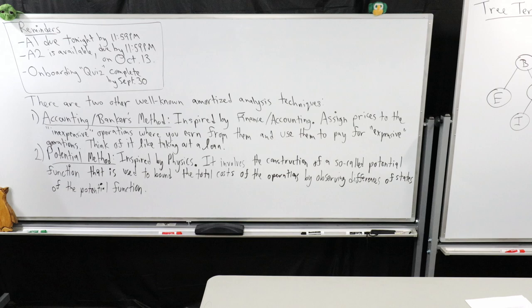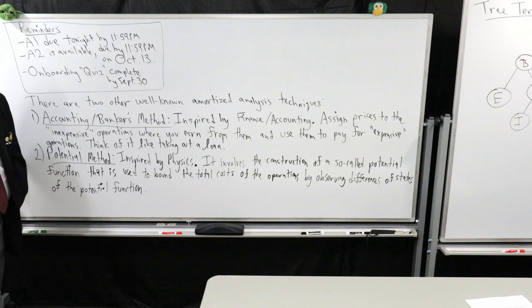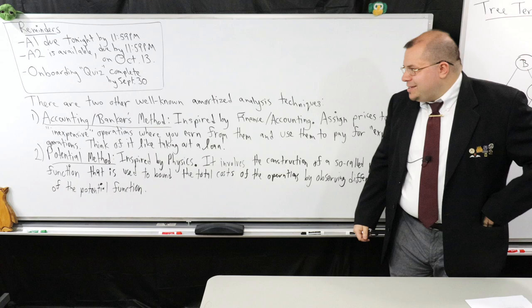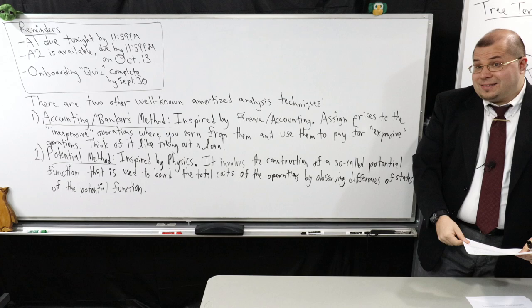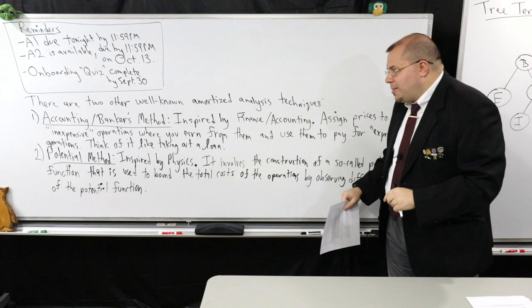I just wanted to give you a flavor for these methods so if you ever came across them you'd have some idea of what they mean. The banker's method is quite similar to the aggregate method; the potential method is often trickier because of the potential function. We might use amortized analysis again later in this class.